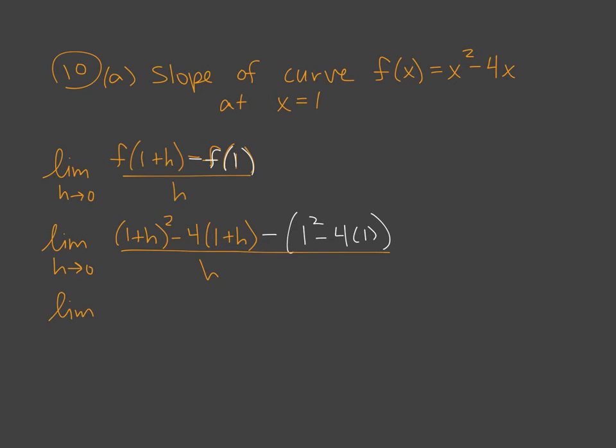As we keep going, when we square 1 plus h, we need to do 1 plus h times 1 plus h. And so we'll end up getting 1 plus h plus h, which is plus 2h, plus h squared. And then we need to distribute the minus 4 through. So we'll have minus 4 minus 4h.